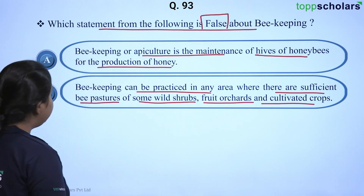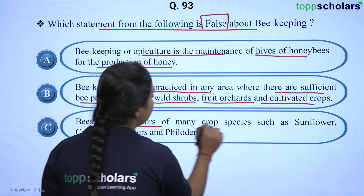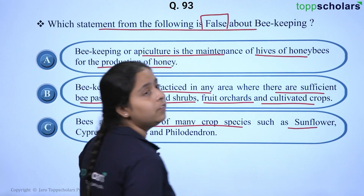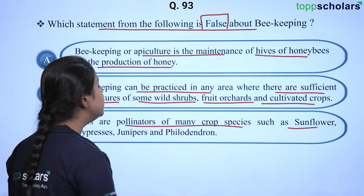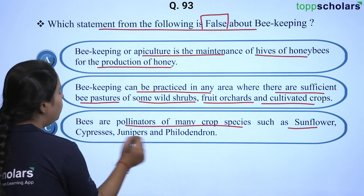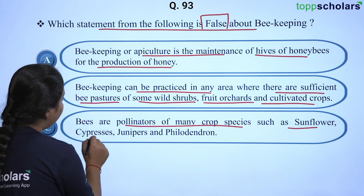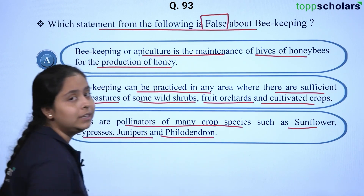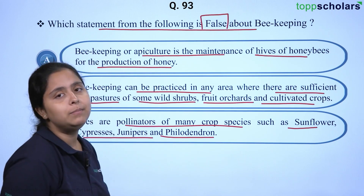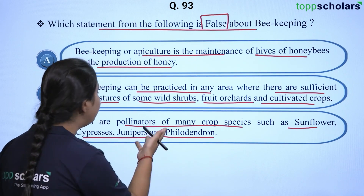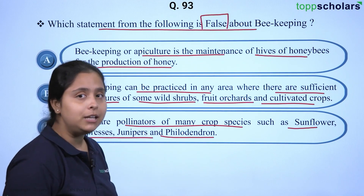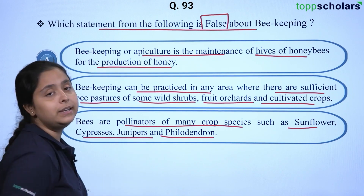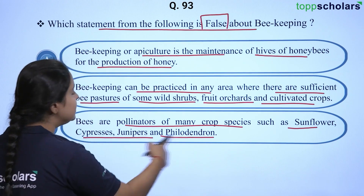Option C: bees are pollinators of many crop species such as sunflower — yes, sunflower does have honeybee as a pollinator. But the statement also mentions cypresses, junipers, and phyllodendron, which are non-flowering plants. If there are no flowers, honeybees cannot be pollinators. Hence this statement is incorrect because of those three names.